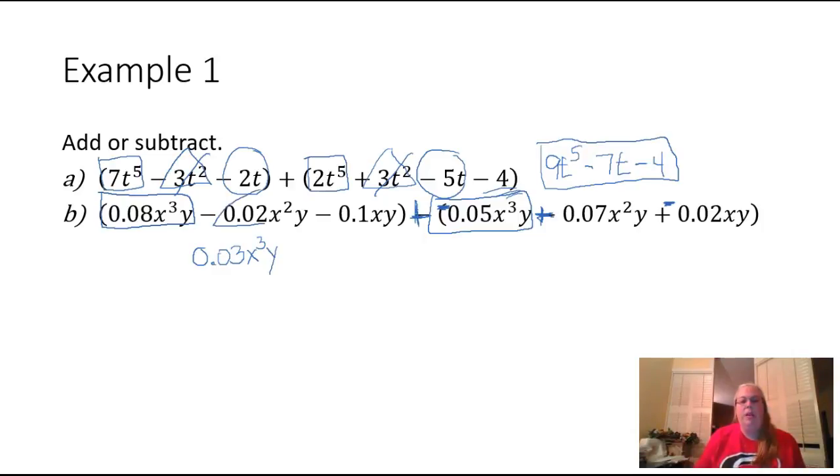My next term here is a negative 0.02. It is an x squared y. And back here, I have one of those. It's a 0.07 x squared y and it's positive. So I'm adding negative 0.02 plus positive 0.07 x squared y.